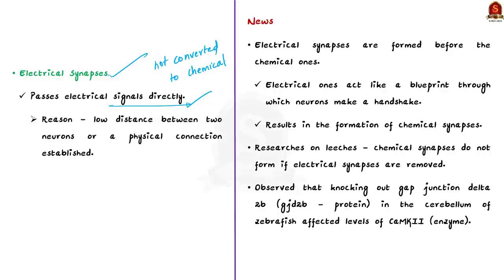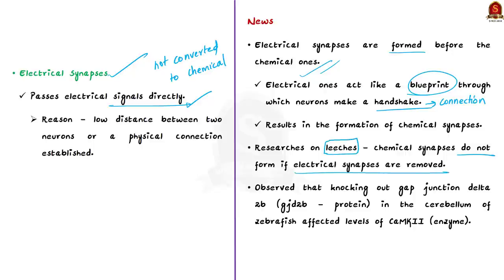According to the research by the National Center for Biological Sciences, electrical synapses are formed before the chemical ones. These electrical synapses act like a blueprint through which neurons make a handshake — that is, they make a connection — and this results in the formation of chemical synapses. Previous research on leeches found that chemical synapses do not form if electrical synapses are removed. But the same situation was not known in vertebrates, and to know this, the research was carried out on zebrafish. They found that electrical synapses are formed before the chemical synapses.